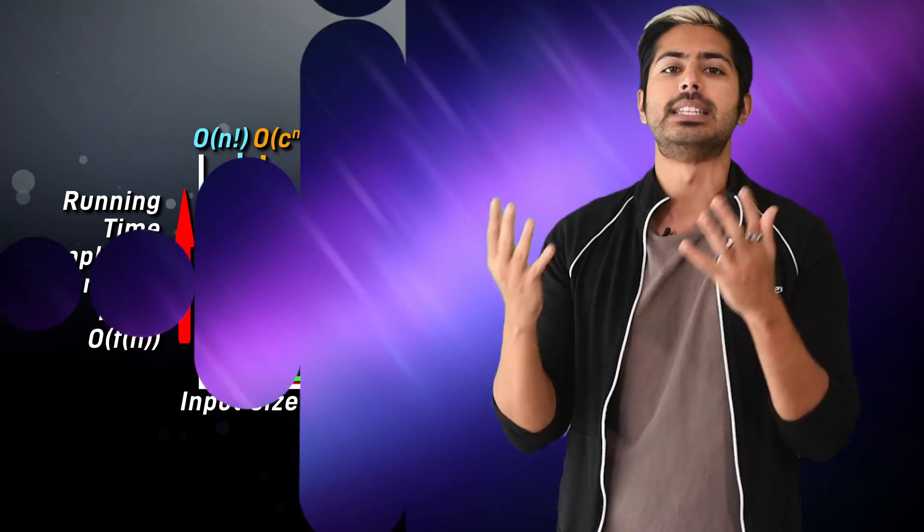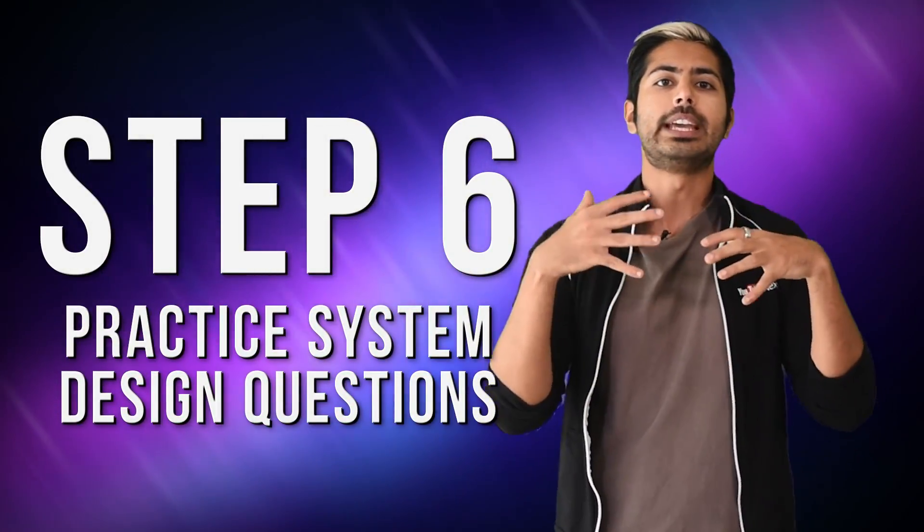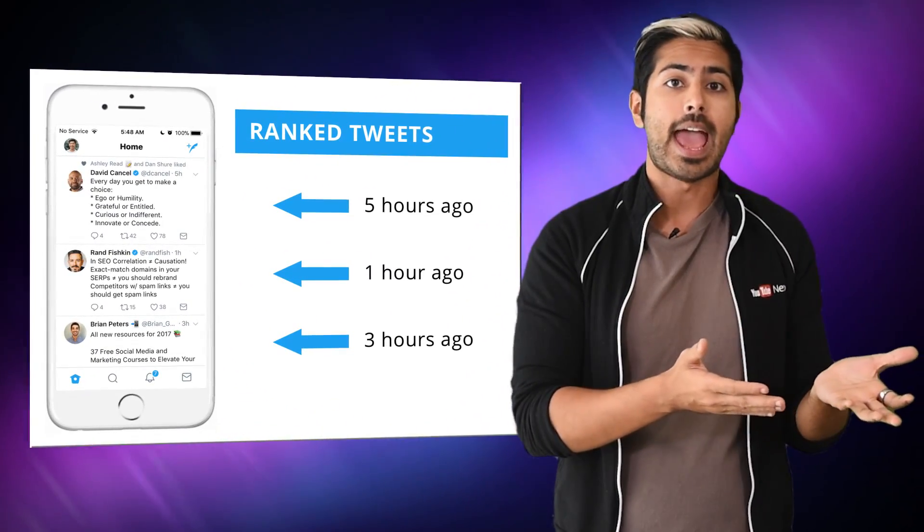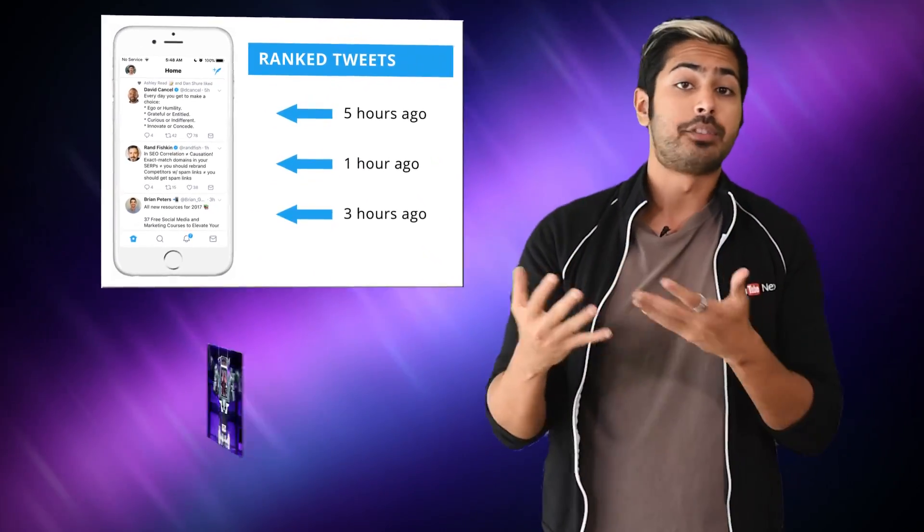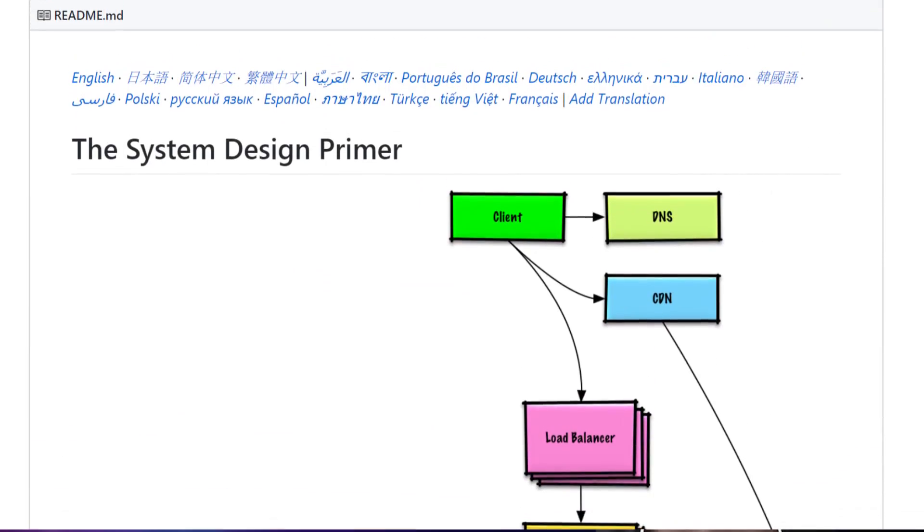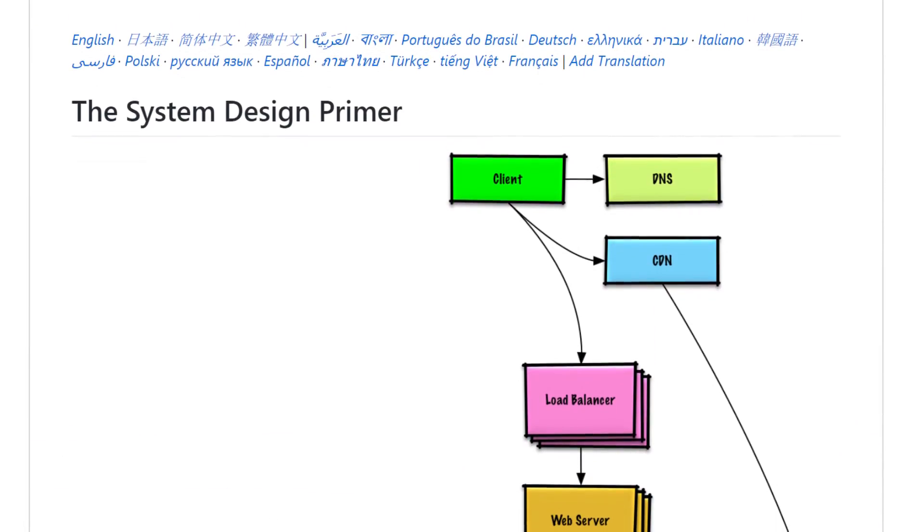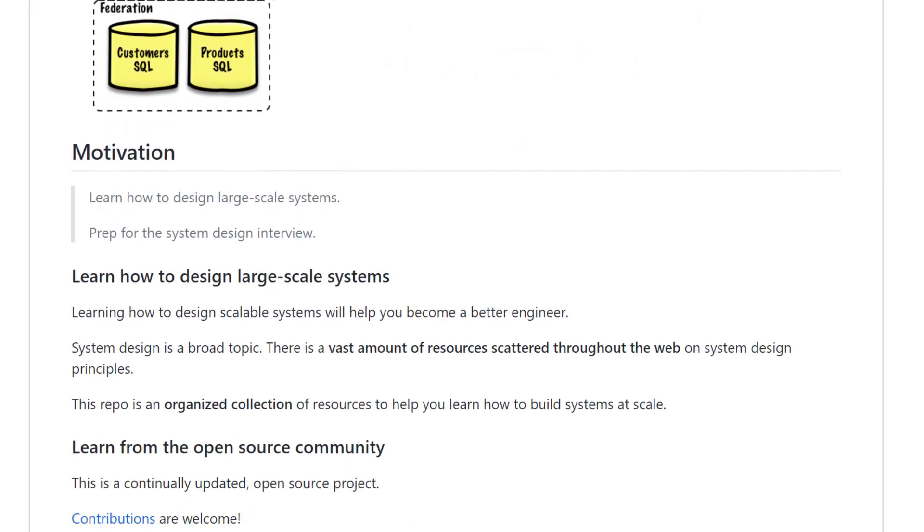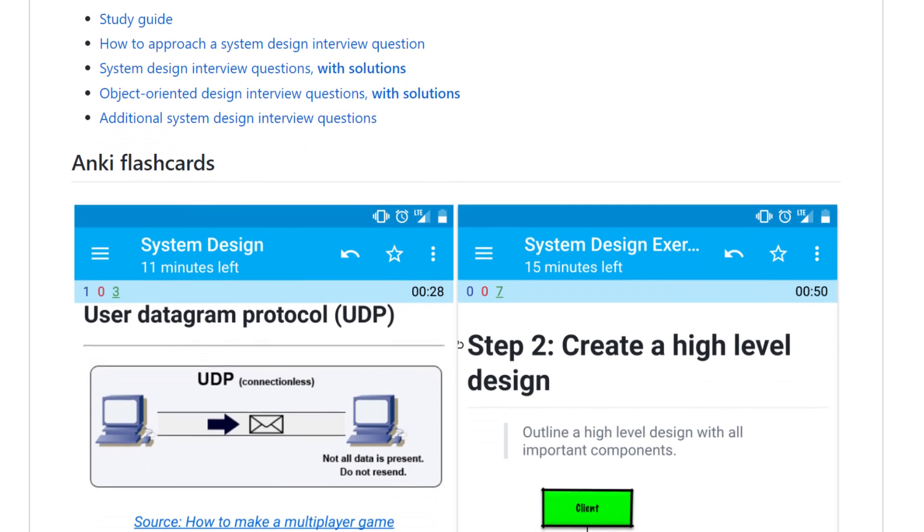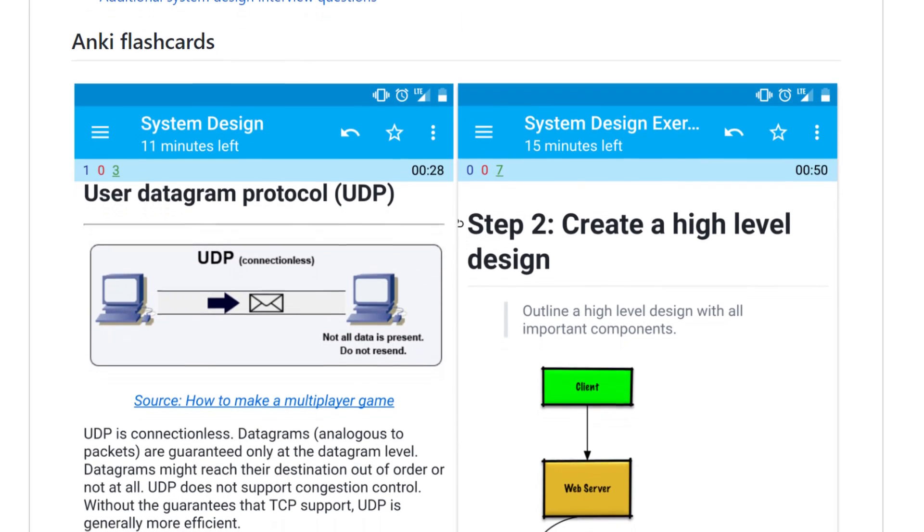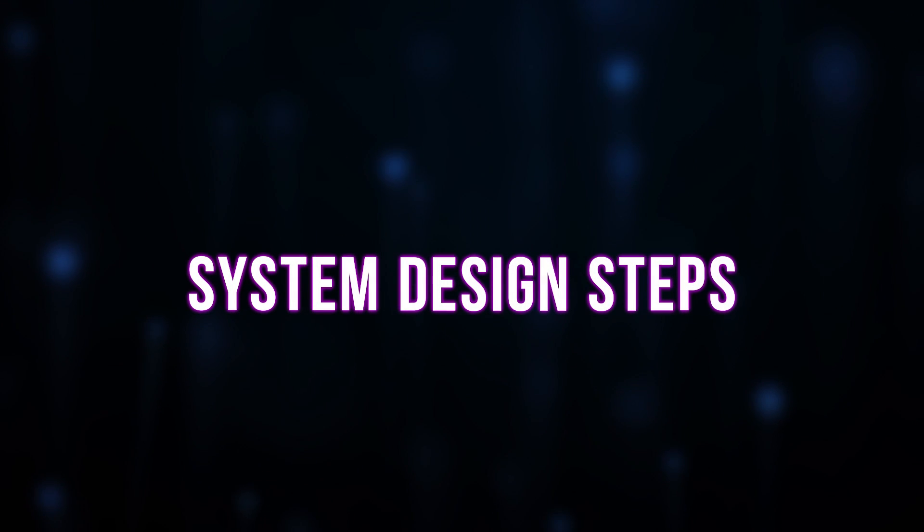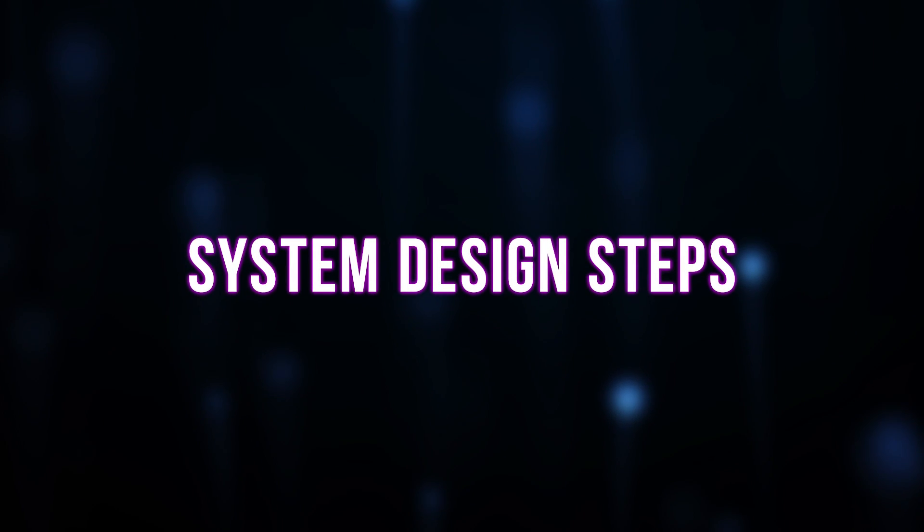System design questions are really an open-ended conversation. If the company is Twitter, they may ask how you'd design the Twitter timeline. If they're Amazon, they might ask you to design an autonomous Jeff Bezos robot. I found this incredible GitHub repository titled The System Design Primer with so many resources to help you learn here. My favorite being the set of flashcards they have that integrate with the Anki flashcard program. Practice these for two hours a day until you complete them all. Answering these types of questions can be broken down into a four-part process.